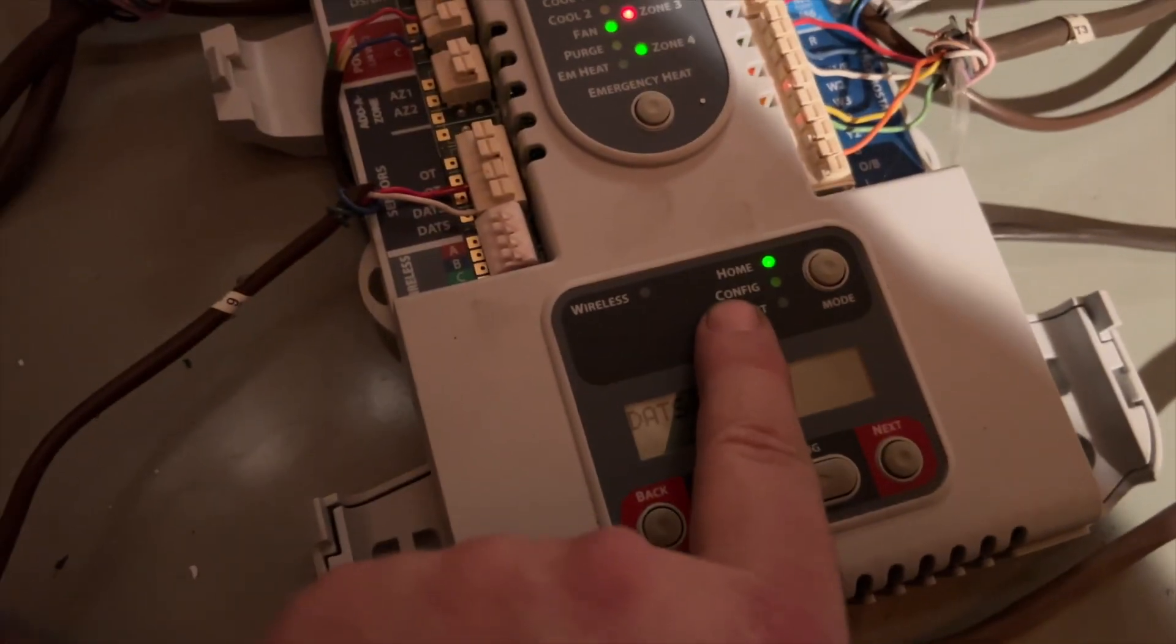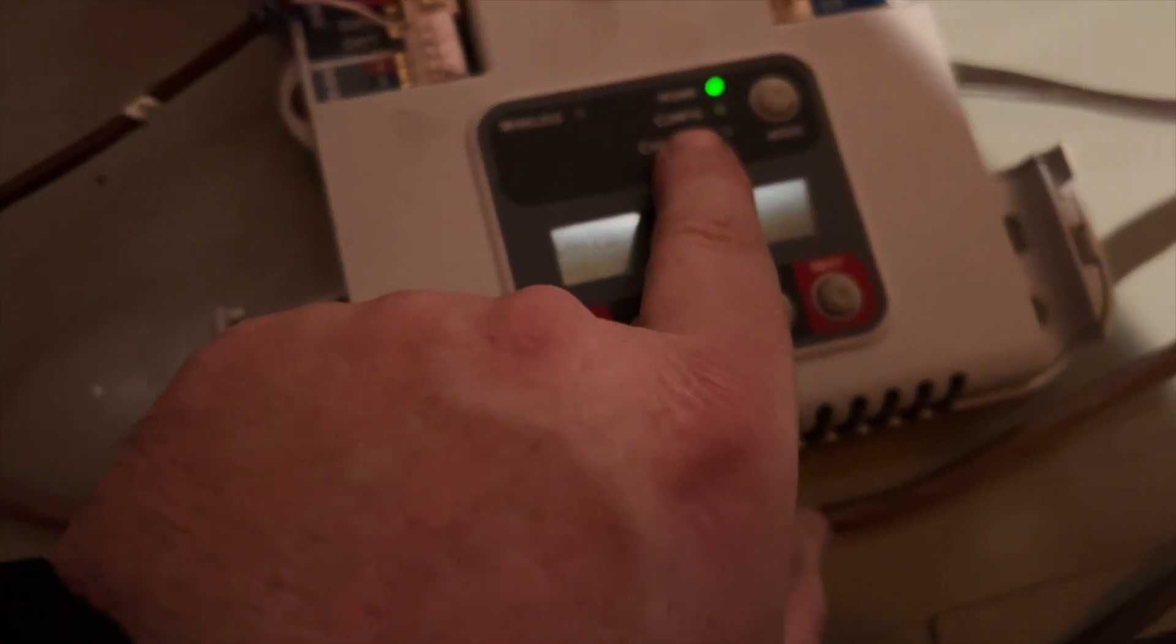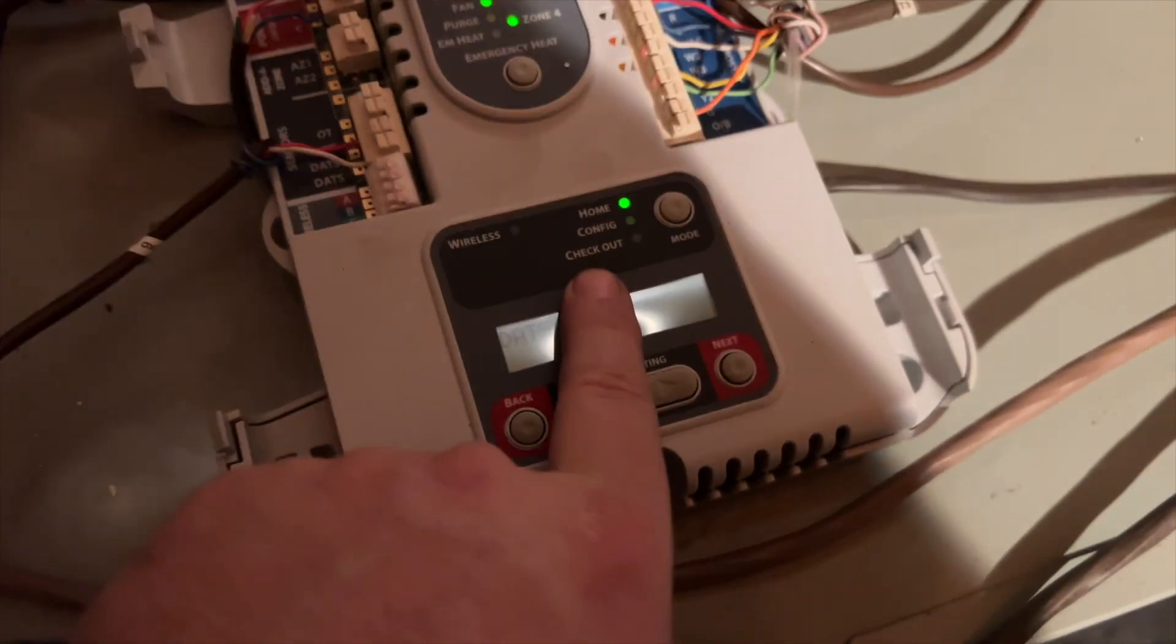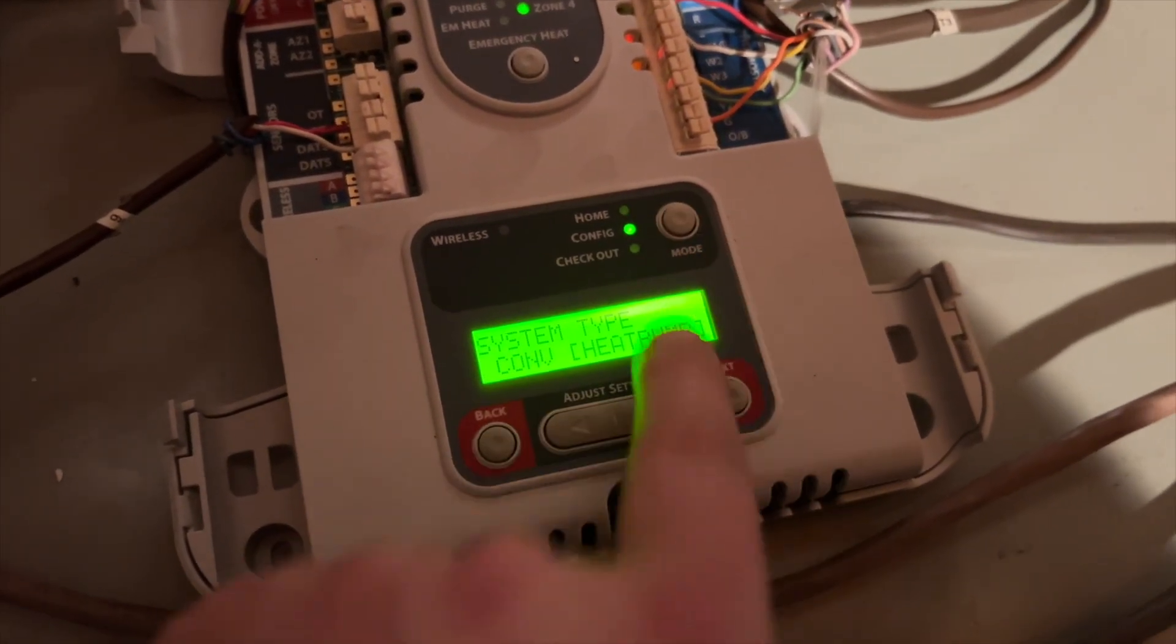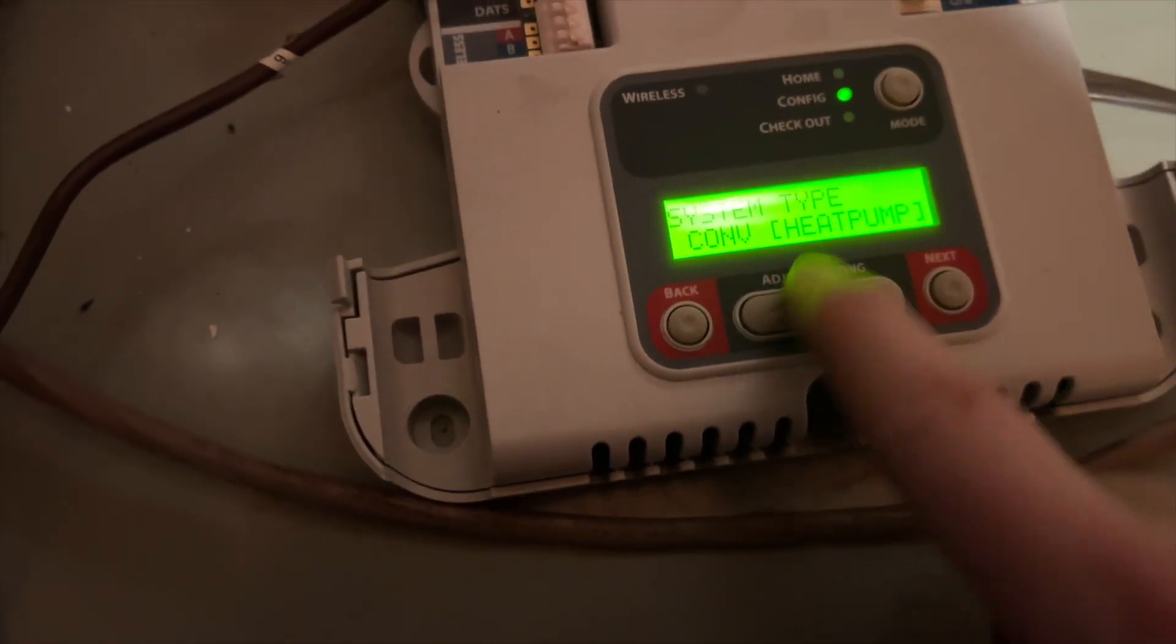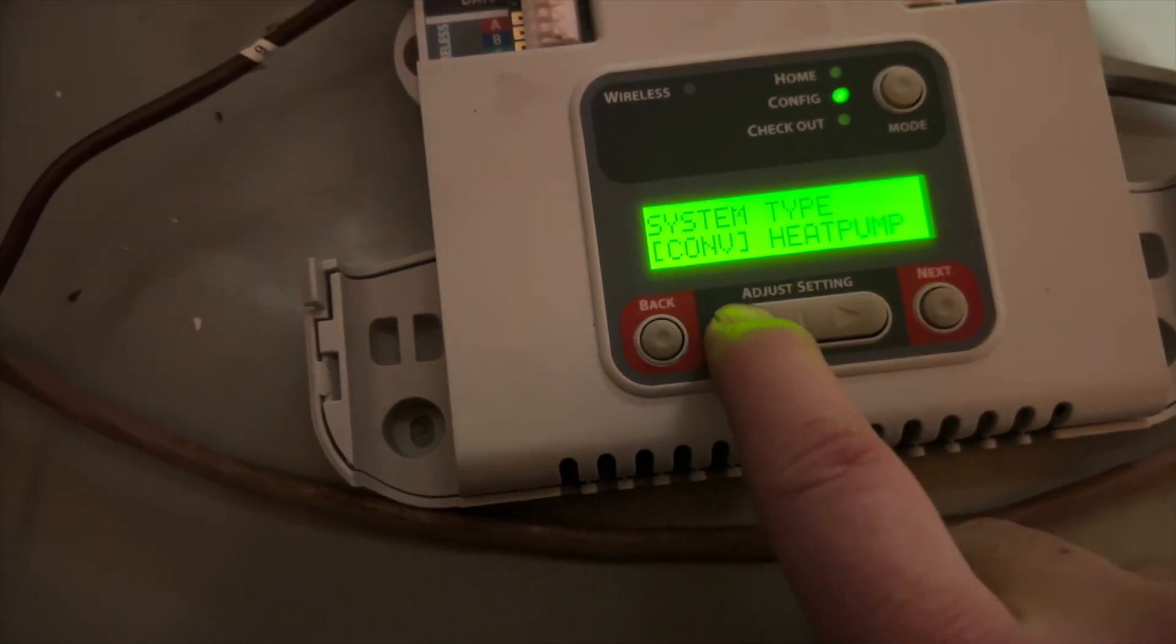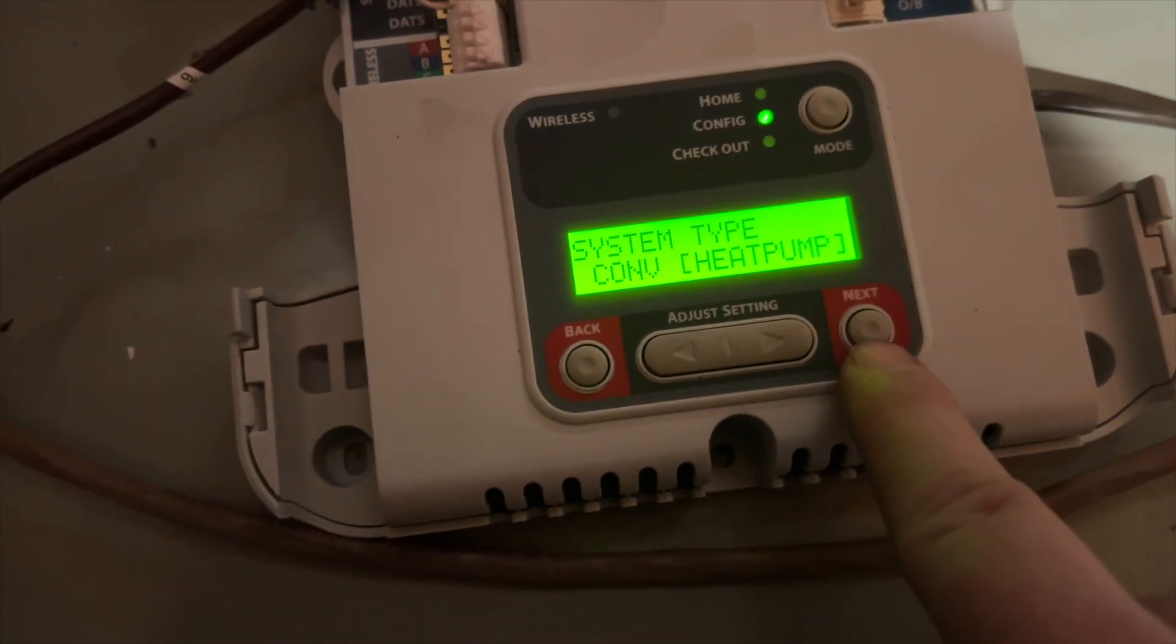Right here we can see we're at home - that's basically normal operation mode. Configure gives us our settings. And checkout basically puts it in test mode. So if we hit this button here, which is our mode button, it takes us into configuration. So here we can change our settings. We're not going to, but this is a heat pump. You can see the brackets are in heat pump. If we wanted to change that, we use these two arrows here. Now it's conventional, now it's heat pump. We want to go to our next setting, we hit next or we can go back.